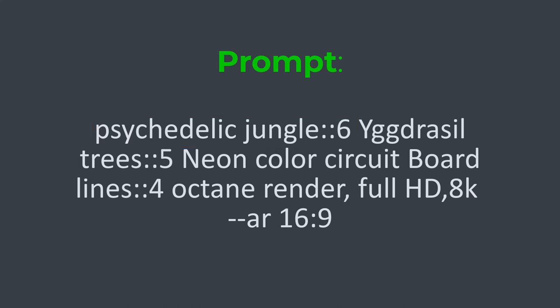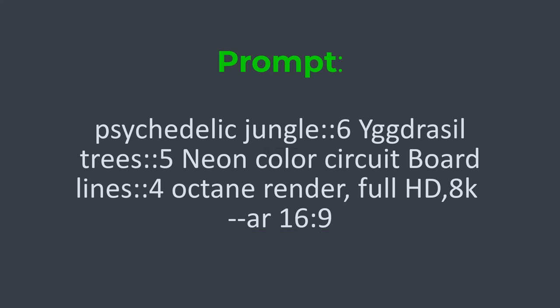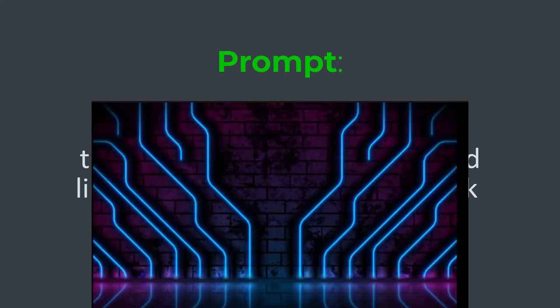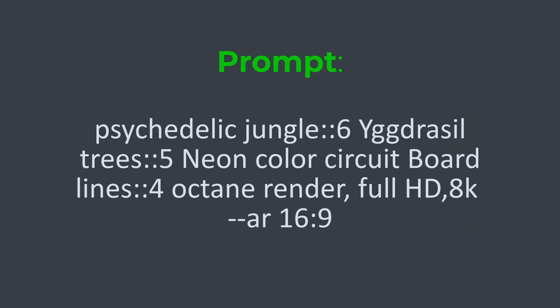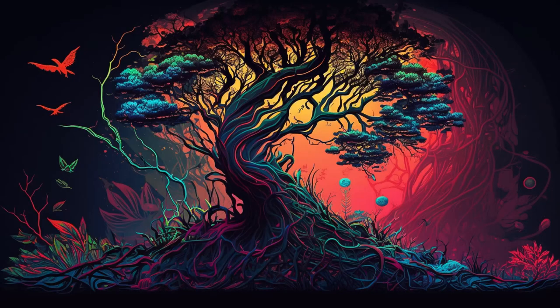We can also specify a negative weight, which will tend to suppress the keyword from the result. For example, 'birds minus 4' means we are asking to avoid birds in the scene. I will not do that, and next I am adding a neon light keyword but as 'neon color circuit board lines', which looks something like this. Finally, I am specifying the quality and the aspect ratio. And here is one of the results, which is my favorite.